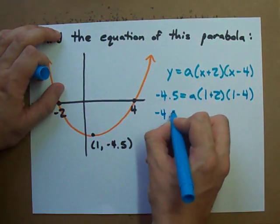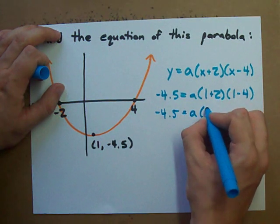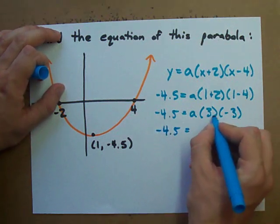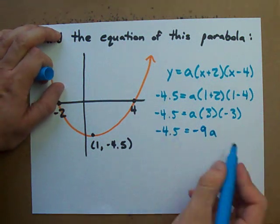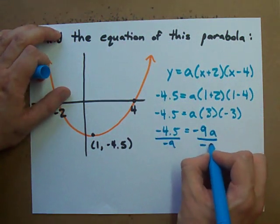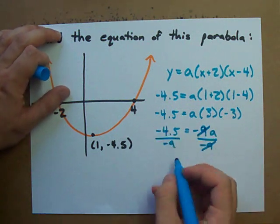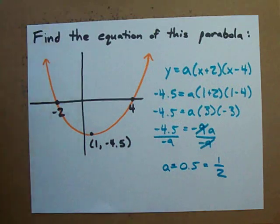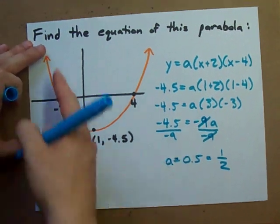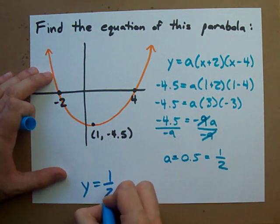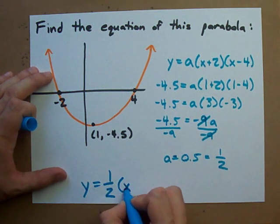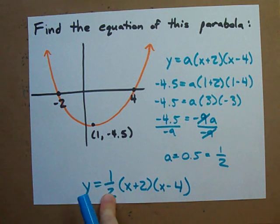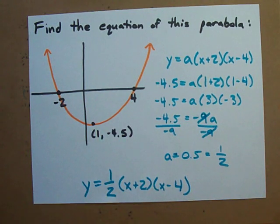Solving for a: negative 4.5 equals a times 3 times negative 3. Simplifying, 3 times negative 3 is negative 9, so negative 4.5 equals negative 9a. Dividing both sides by negative 9, negative 4.5 divided by 9 gives 0.5, or one half. So the equation of this parabola is y equals one half times (x plus 2)(x minus 4), with x-intercepts and a both built in from the given information.